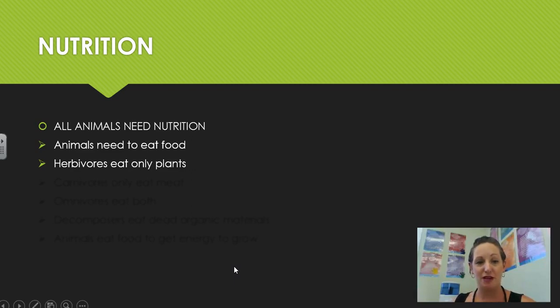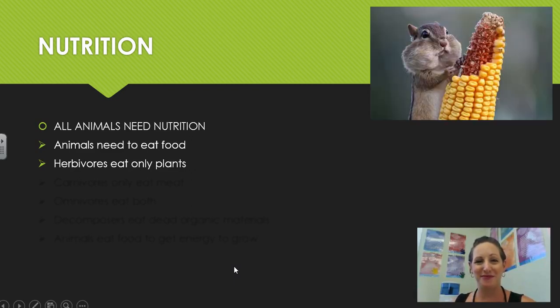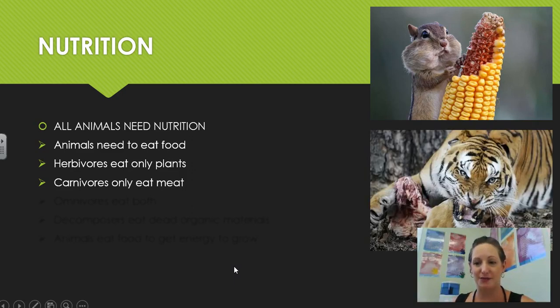Herbivores are animals that only eat plants. Carnivores are animals that only eat meat. And omnivores are animals that can eat both.